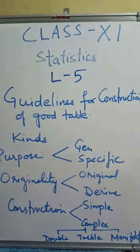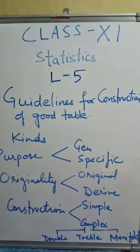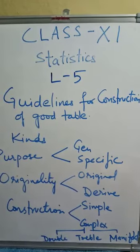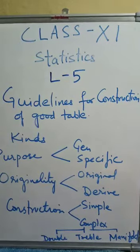A good table should possess at least 17 features, which are as follows: